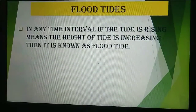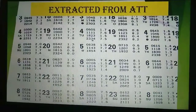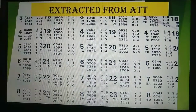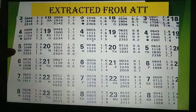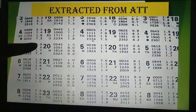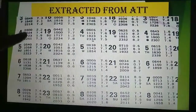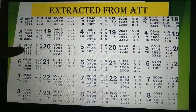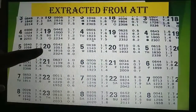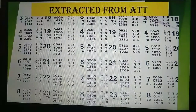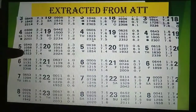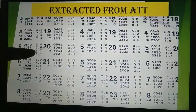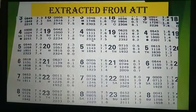And what is flood tide? In any time interval, if the tide is rising — meaning the height of the tide is increasing — then it is known as flood tide. As you can see, this is extracted from the Admiralty Tide Table. In these daily pages, at 0540 hours the height of tide is 2.0 meters, and at 1058 hours the height of tide is 7.5 meters — the height is increasing from 2 to 7.5 meters, so this is known as flood tide. From 1058 to 1820, the height of tide was 7.5 meters and is now 1.7 meters — the height of tide is decreasing, so it is known as ebb tide. This is the difference between ebb tide and flood tide.